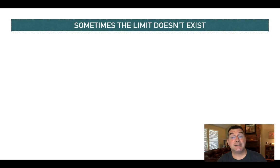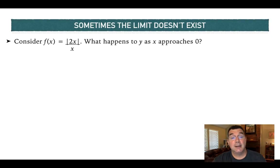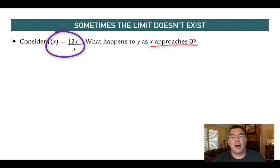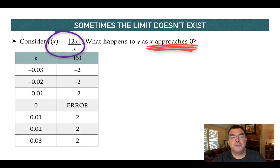What you need to know is that sometimes the limit does not exist. Consider this function: f of x equals the absolute value of 2x, all over x. So what's going to happen to the y values as x approaches 0?